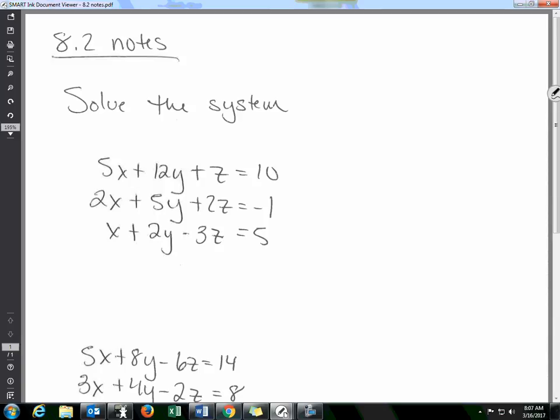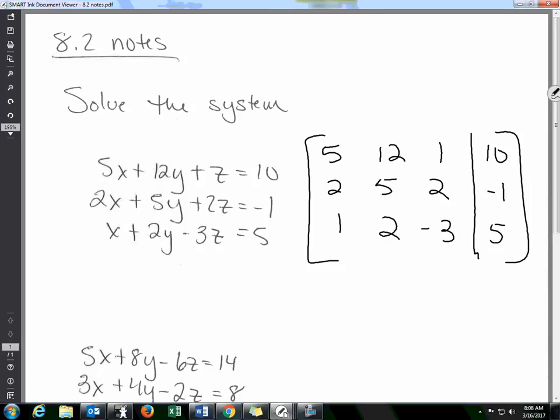So just like yesterday, we're going to pull out and make our augmented matrix from this set of equations. So that's five, twelve, one, and ten; two, five, two, negative one; one, two, negative three, and five. Now I'm going to put this into the graphing calculator.